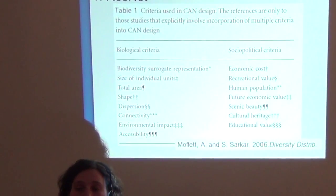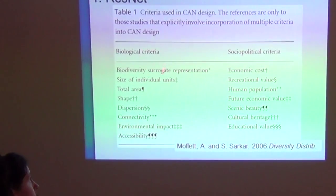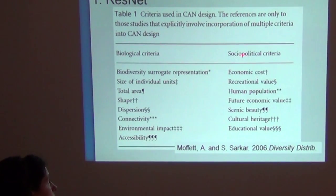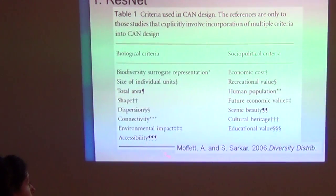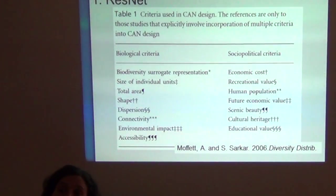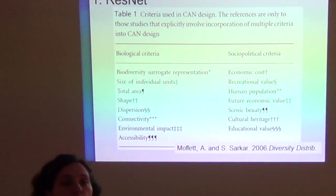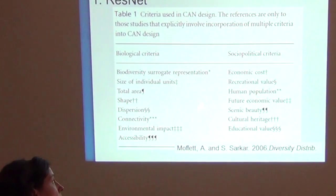Based on this optimization algorithm, ResNet — what is interesting about this review is that it provides not just biological criteria that have been used in prioritization studies, but also socio-political criteria. So we have the usual biological criteria, but also criteria that we as biologists may not be familiar with, or may not have thought about including in a prioritization analysis. This review is very good in providing a broader understanding of how prioritization is done, how diverse the criteria can be, and they should be more than just biological criteria.